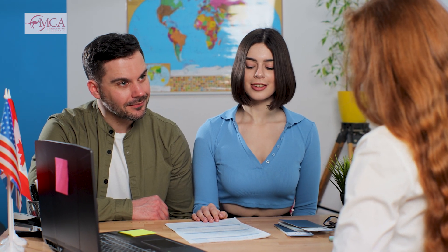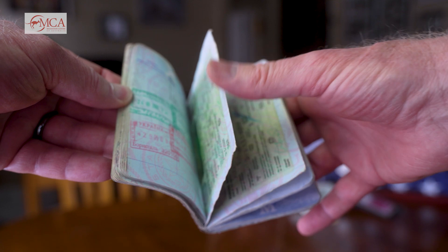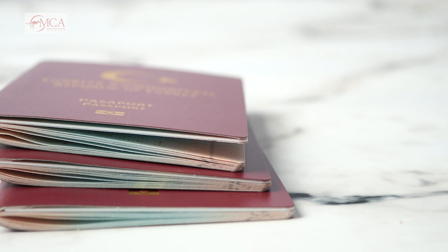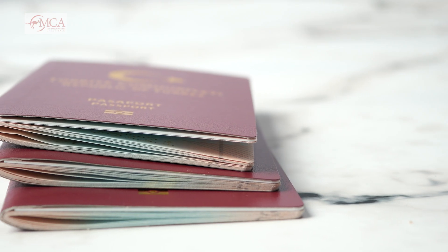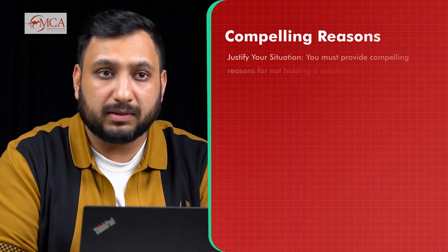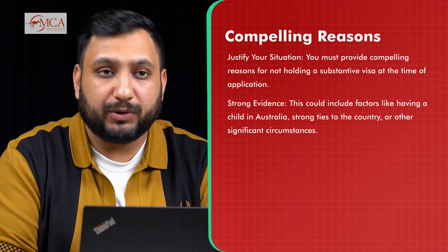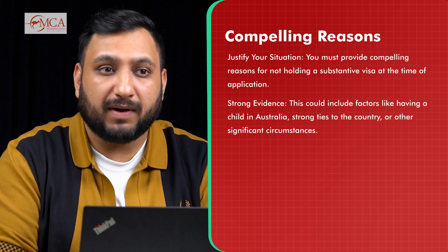When you lodge a partner visa application, you need to ensure that compelling reasons have been provided to justify why you did not hold a substantive visa at the time of application. These are quite serious grounds, and many partner visas have been refused due to not satisfying or providing compelling reasons for this.